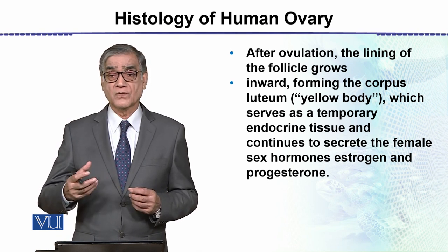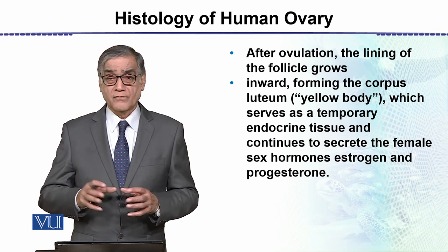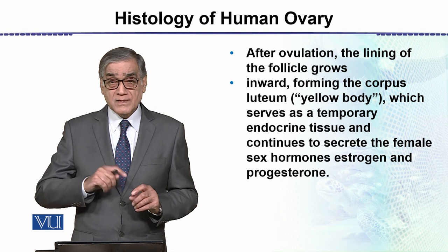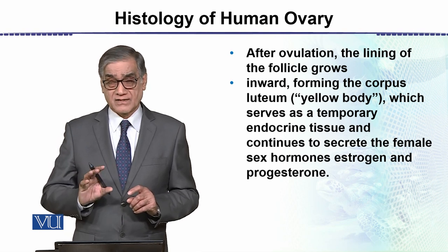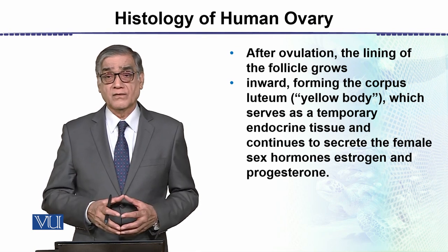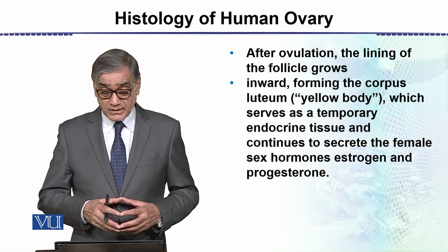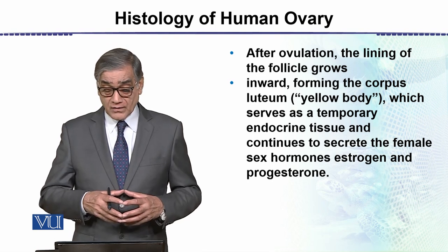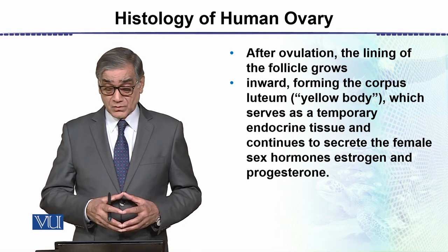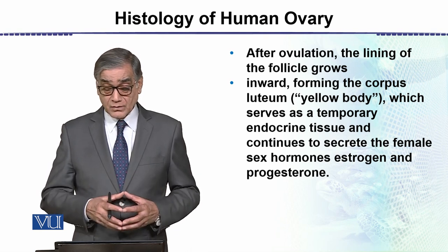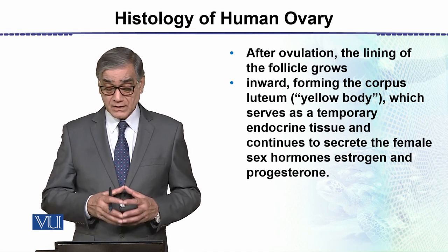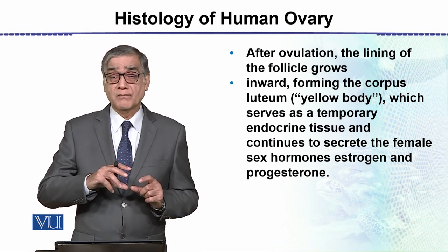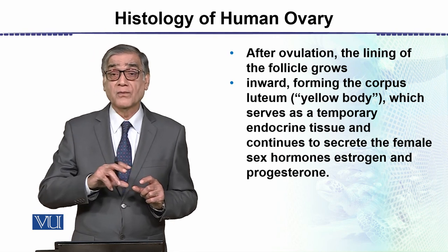Ovulation means the release of the ovum from the surface of the ovary. After release from the surface, it will come into the fimbriae. If sperms are present it will be fertilized; if not, it will not be fertilized. After ovulation, the lining of the follicle grows inward, forming the corpus luteum, which serves as a temporary endocrine tissue and continues to secrete the female sex hormones estrogen and progesterone.